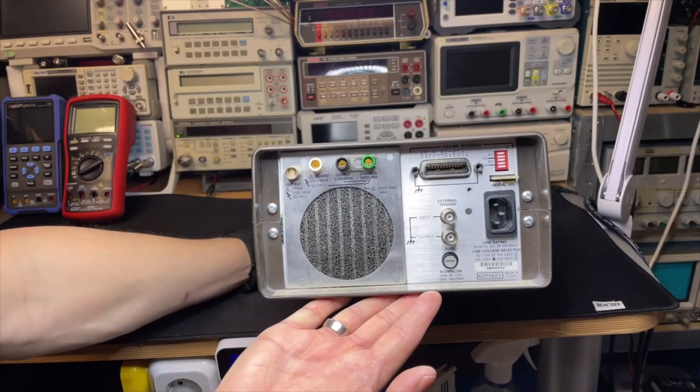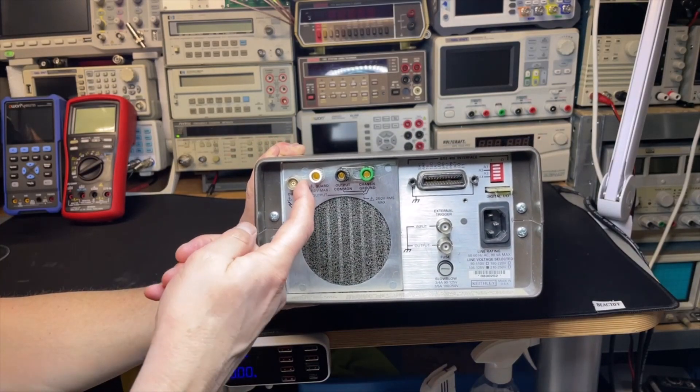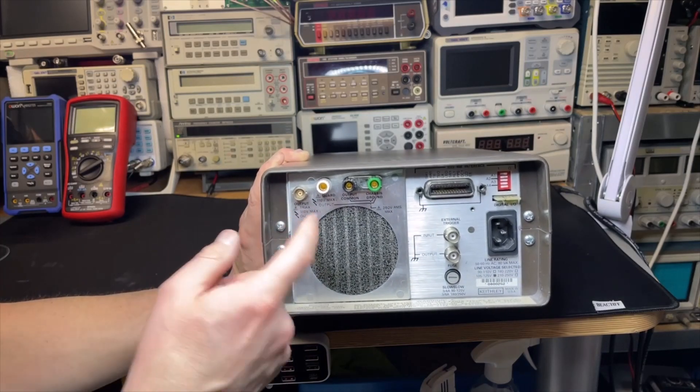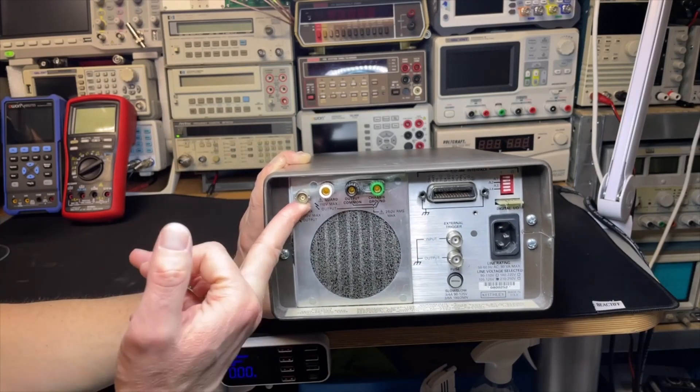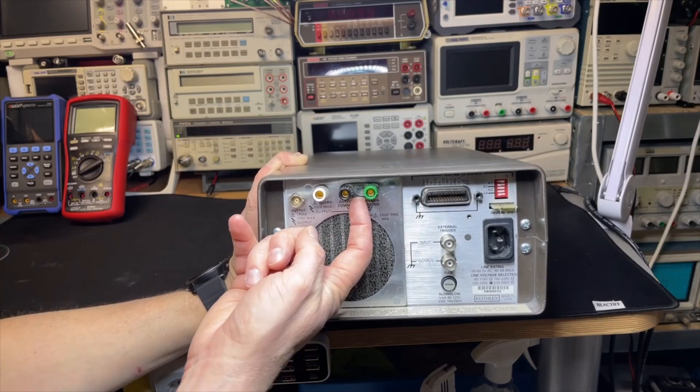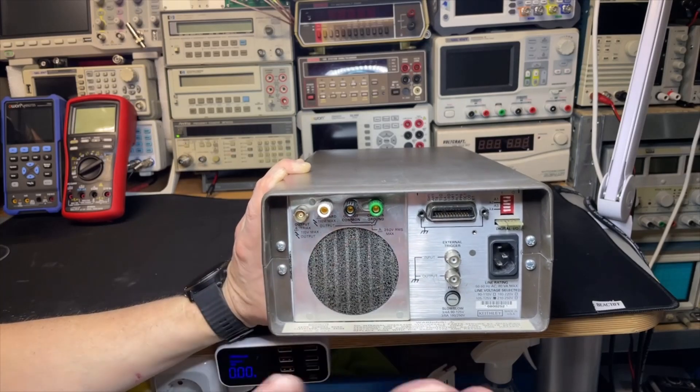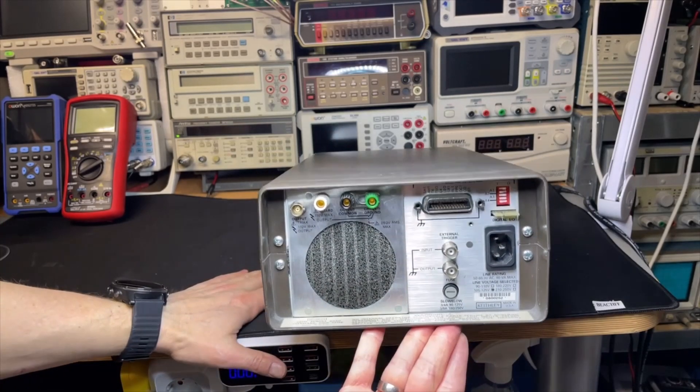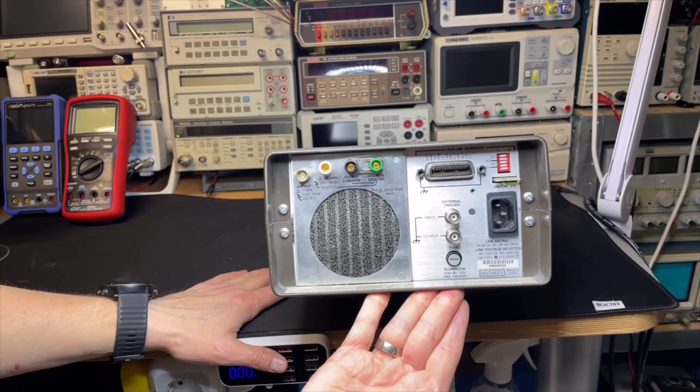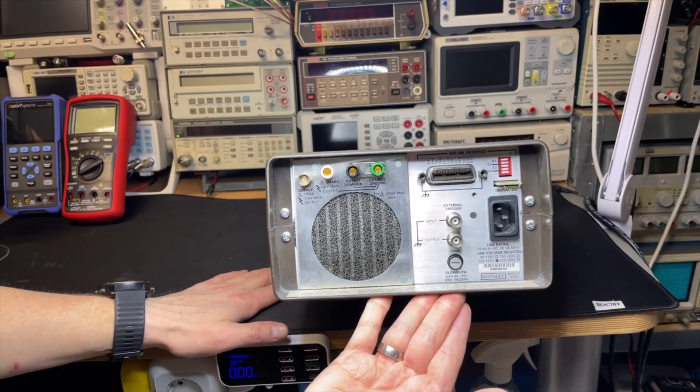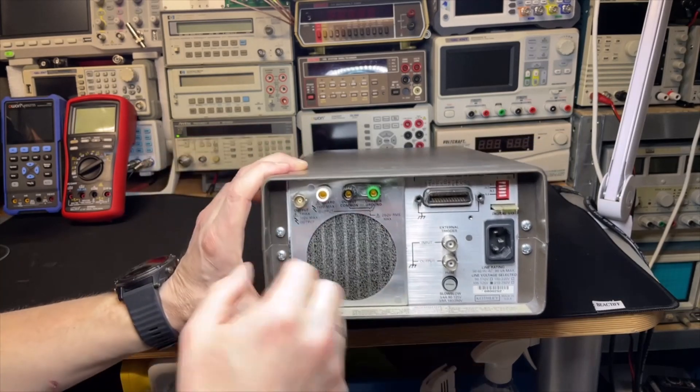I saw on the Signal Path YouTube channel that these are actually very old triax connections. The good thing with the two pins is I can just leave this short here and use a standard BNC. I don't need any converter. I looked on the internet for converters - they're between 40 to 150 dollars.